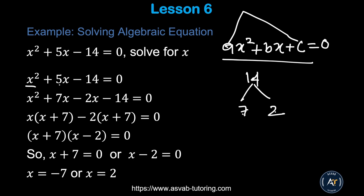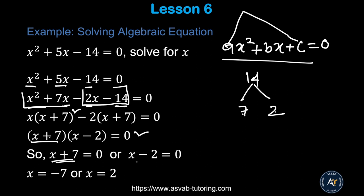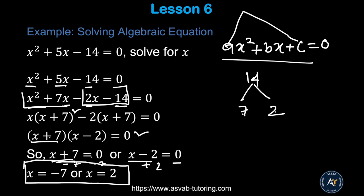Rewrite x² + 5x − 14 as x² + 7x − 2x − 14. Factor the first pair: x(x + 7), and the second pair: −2(x + 7). This gives (x + 7)(x − 2) = 0. Since the product is zero, each factor equals zero: x + 7 = 0 gives x = −7, and x − 2 = 0 gives x = 2.